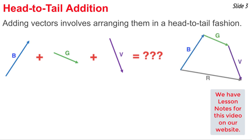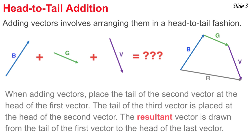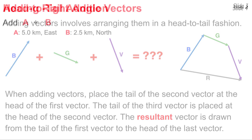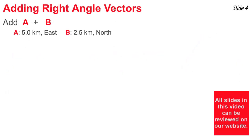When we add them, we do it like this. First we draw vector B, and where the arrowhead of B ends, we begin vector G. And where the arrowhead of G ends, we begin vector V. Once all three vectors have been added in this head-to-tail fashion, we draw the resultant from the tail of vector B to the arrowhead of vector V.